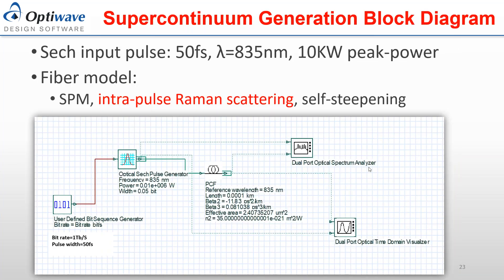The structure we're going to discuss for the supercontinuum is a pulse with 50 femtosecond width — a soliton pulse set at 835 nanometers, mainly the source available from the authors Dudley et al. We're going to set the power level to 10 kilowatt peak power, then set up the fiber parameters according to what we extracted from the OptiMode software, and then run the simulation.